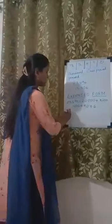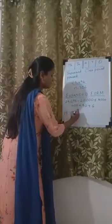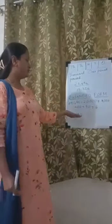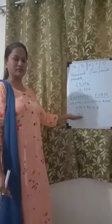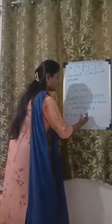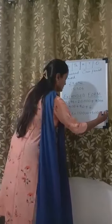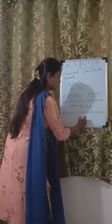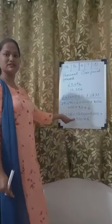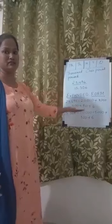Let me give you one more example. Let us take the example of the second number, 15,306. Now, if there is a 0 in a number, the value for the 0 remains the same. So when I write the expanded form of this number, it will be 10,000 plus 5,000 plus 300 plus 6. The place value for 0 is 0, so there is no need to write the place value of 0 when we expand the number.